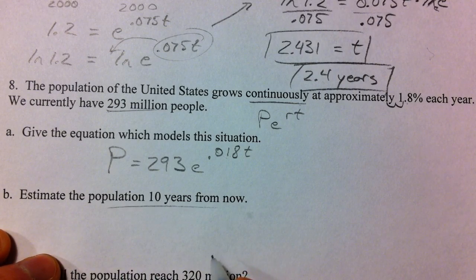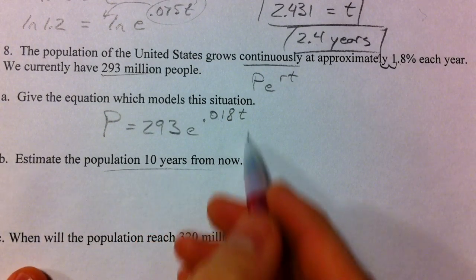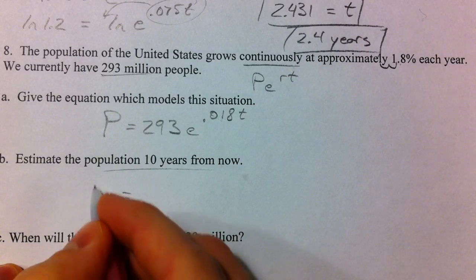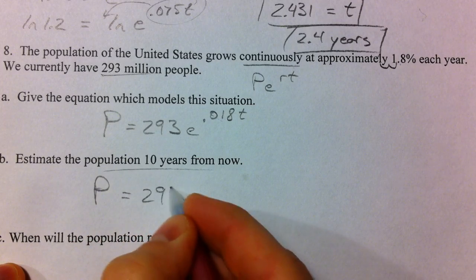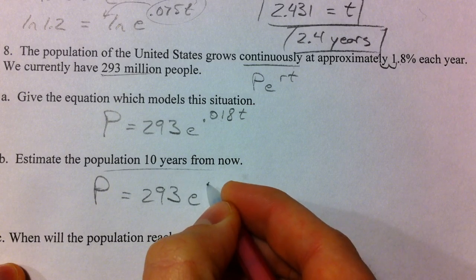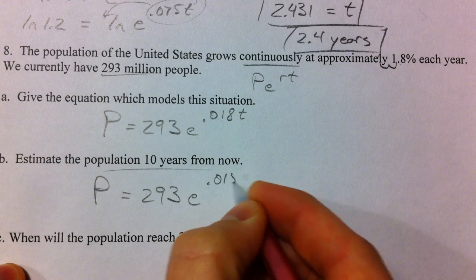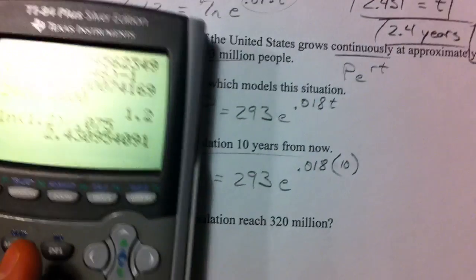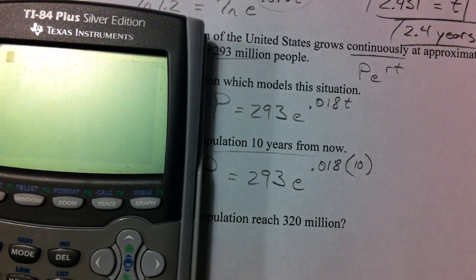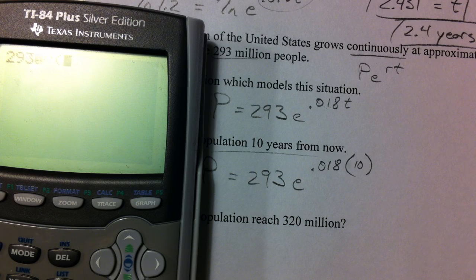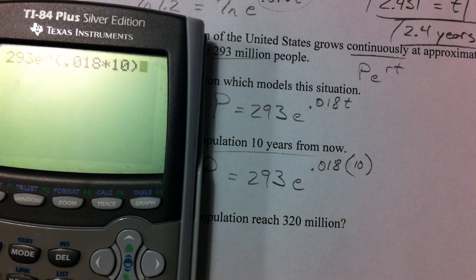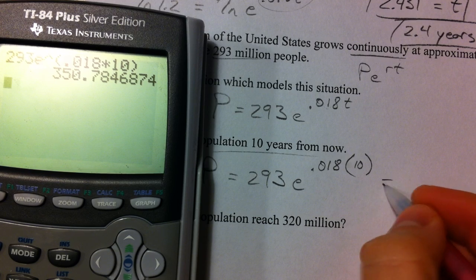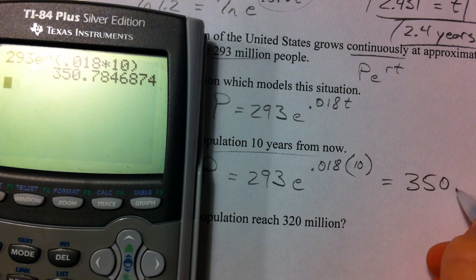Estimate the population 10 years from now. So we want to know when T is 10, what is your population? 293 E to the 0.018 times 10. And so we type that in 293 times E to the power of 0.018 times 10, or just 0.18.